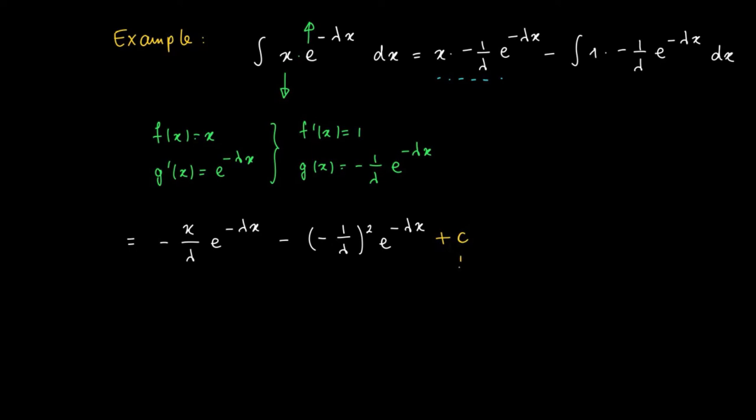And don't forget the integration constant. We can write this a little bit differently. So here we repeat the first term and the second one is 1 over lambda squared times e to the power minus lambda x plus c.